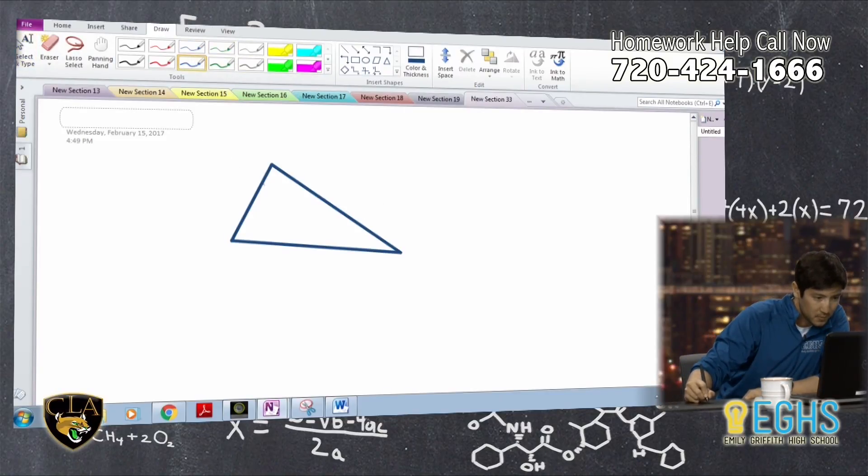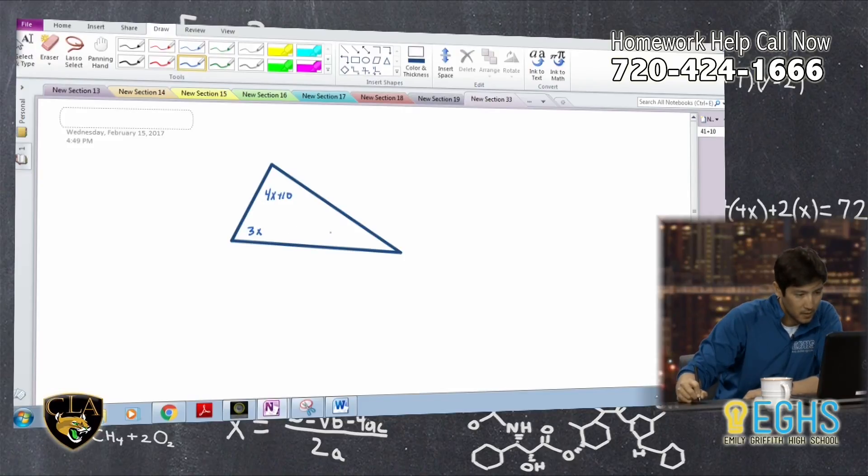We got one angle is 4x plus 10. We've got another angle that's 3x. We've got another angle that is 4x plus 5.